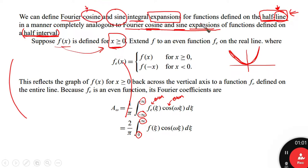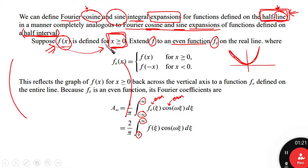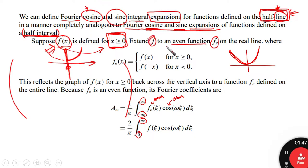Suppose that f(x) is defined on the right half-line where x ≥ 0. We extend this function to an even function, called f_e, on the real line. As if we take the function from zero onward and reflect it across the vertical axis as a mirror, to obtain an even function f_e on the entire real line.